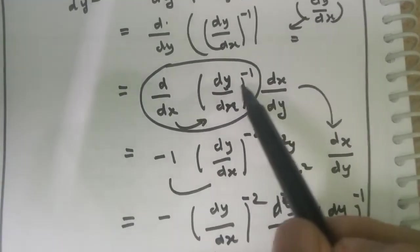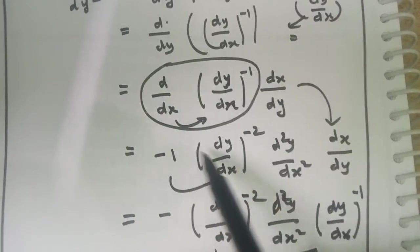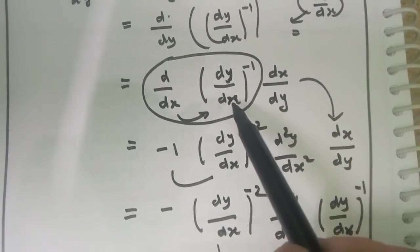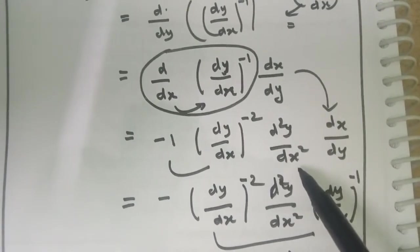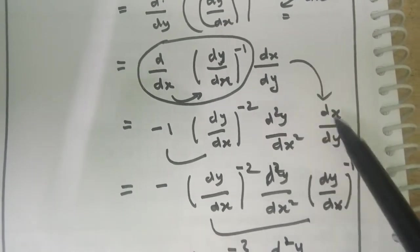After writing the chain rule, we differentiate by using x^n formula. You all know that differentiation of (dy/dx)^(-1) is -1(dy/dx)^(-2). Then inside the differentiation, we get d²y/dx², and dx/dy as it is we write.